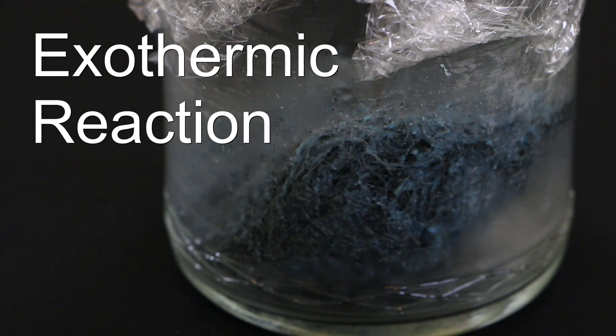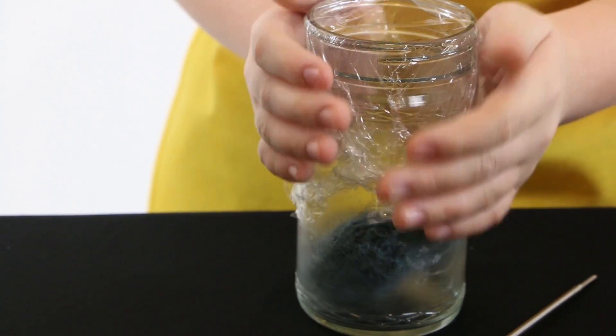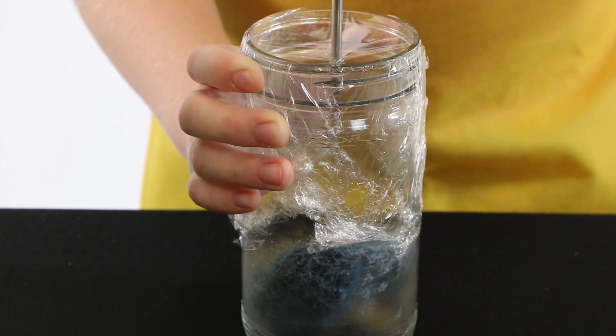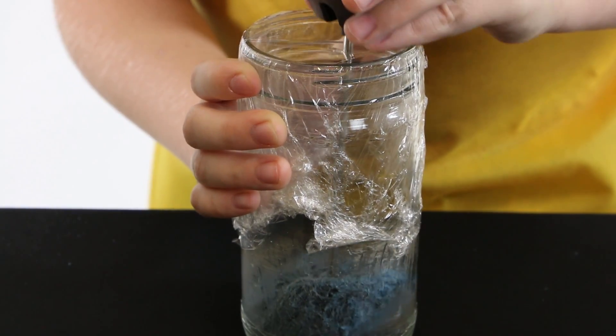An exothermic reaction is taking place. You can also get a thermometer, poke it through the Saran Wrap, and into the steel wool to see how hot it is.